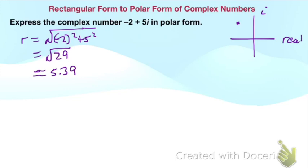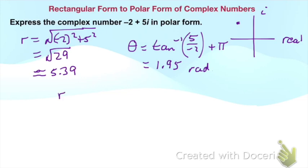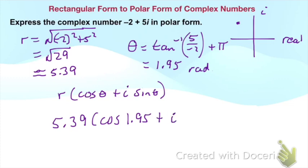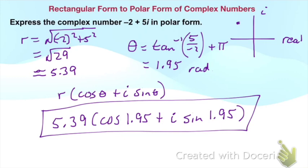So we have to use the plus π part of our function. Theta is tan⁻¹(b/a) and we're going to add π. Make sure you are in radians when you do this, because we're going to put our answers in radians. When you do this on your calculator and add the π at the end, you should get 1.95 for θ, and this is in radians. Then we write the polar form: r(cos θ + i sin θ). So we plug our pieces in: 5.39(cos 1.95 + i sin 1.95). And now we have our complex number in polar form.